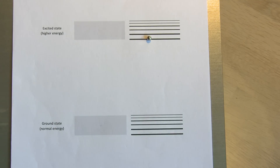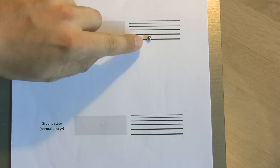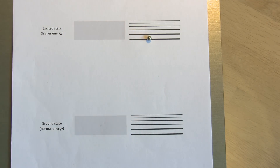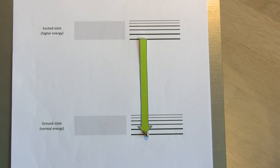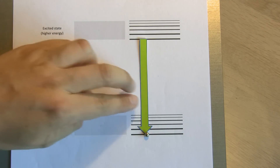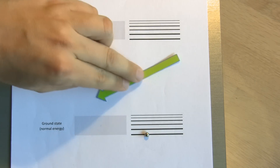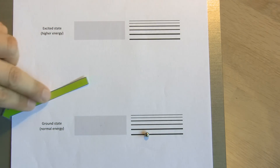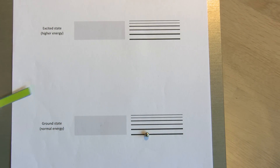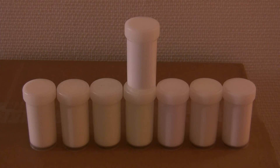It basically heats up its surroundings. After releasing a little heat energy, it makes a larger jump into the ground state by releasing energy in the form of a photon of visible light.